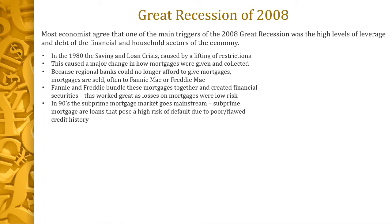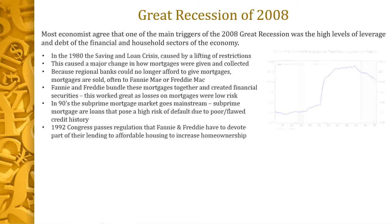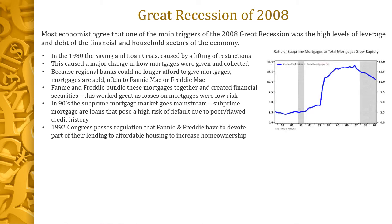Subprime mortgages are loans that pose a high risk because the person getting the loan tends to have poor or flawed credit history. This happened because in 1992 Congress passed regulations saying Freddie and Fannie had to do more to help poor people get into houses, since most people's wealth is in their home. One chart shows the ratio of subprime mortgage rates going up dramatically right around 2003, right after Congress passed legislation saying these institutions needed to do something to lift people out of poverty and make it easier to get a mortgage.